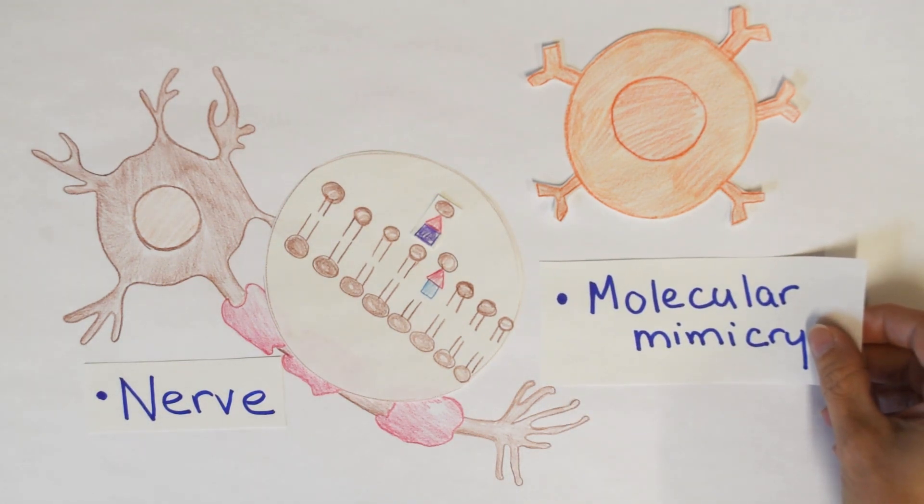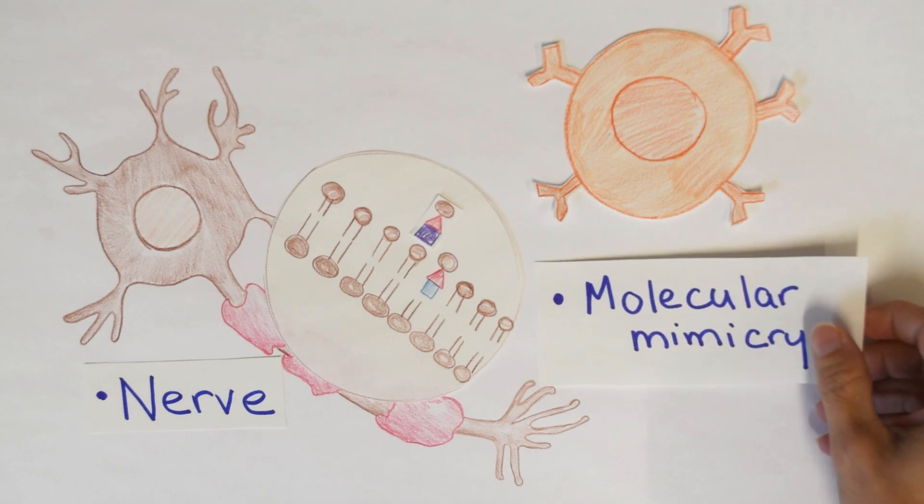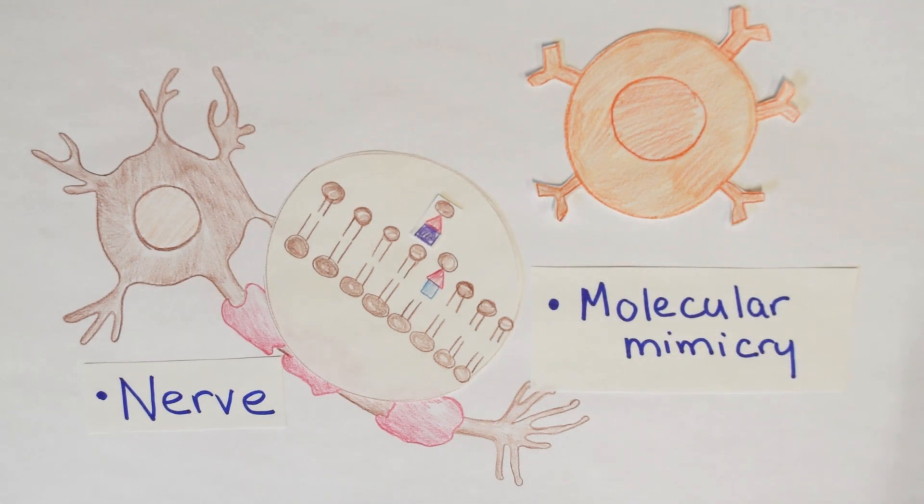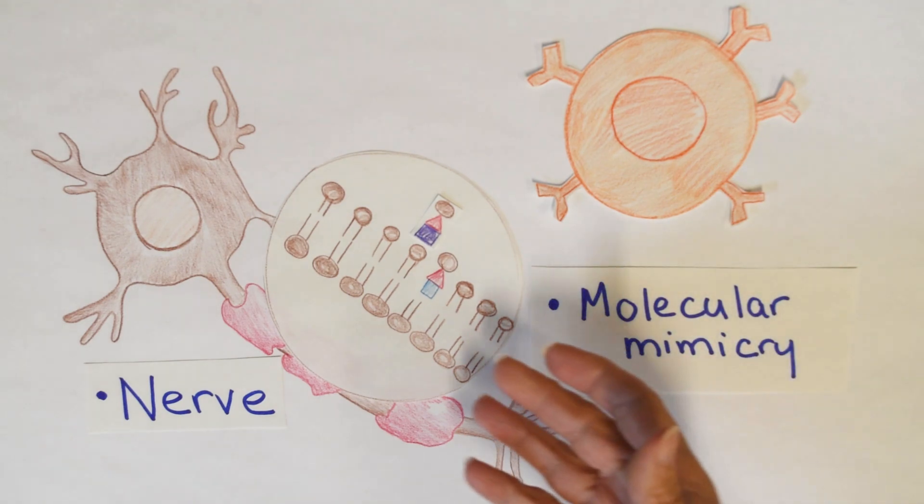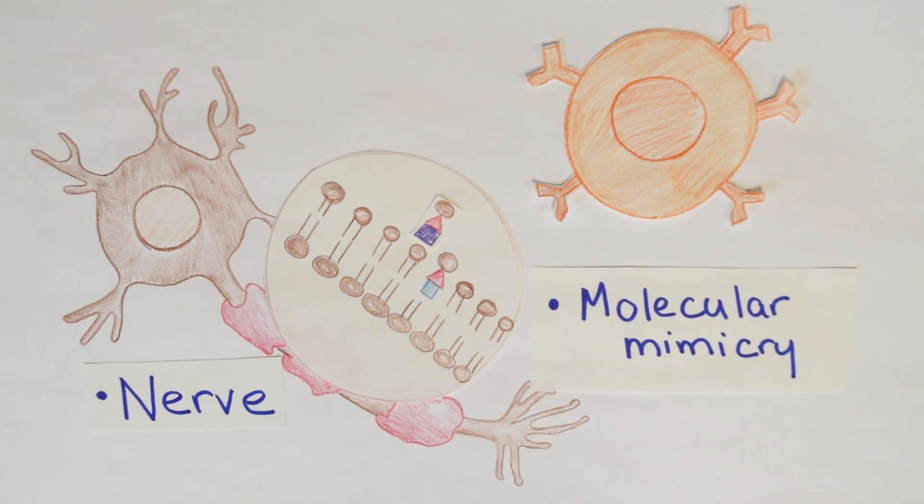It's a terrible circumstance by which your immune system fights off an infection, but it looks so much like your body, one of your cells, that it continues to fight them. Yep. Both B cells and T cells are confused and will both attack the nerve.